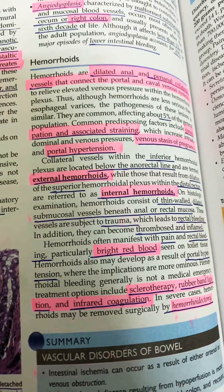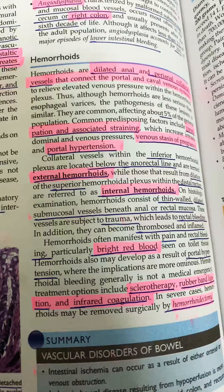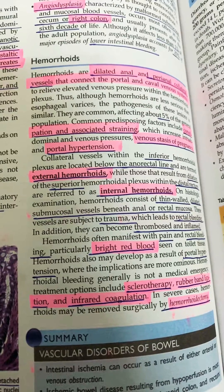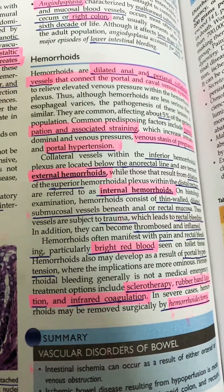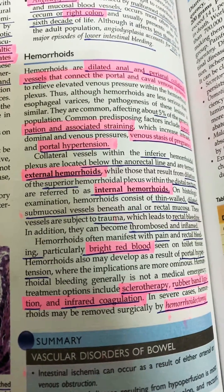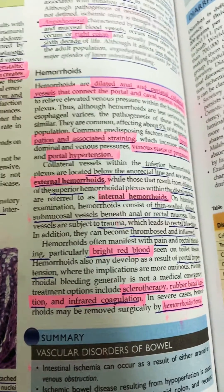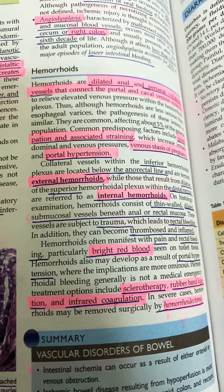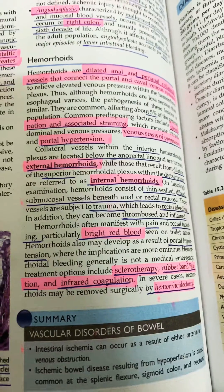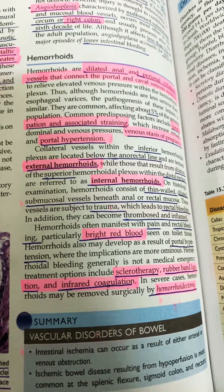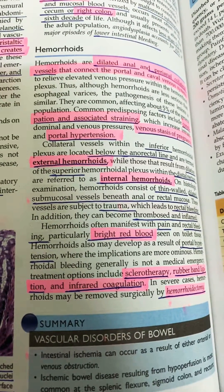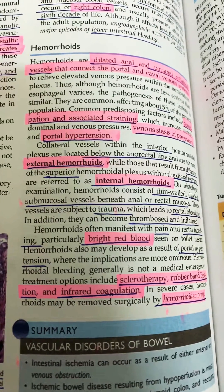On histological examination, hemorrhoids are thin-walled dilated submucosal vessels beneath the mucosa. There will be rectal bleeding, and these vessels are subject to trauma, and may become inflamed and thrombosed. Hemorrhoids often manifest with pain and bright red rectal bleeding. Treatment includes rubber band ligation, infrared coagulation, sclerotherapy, and in severe cases, surgical removal by hemorrhoidectomy.